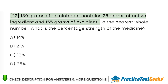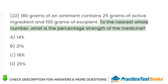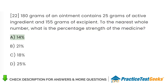180 grams of an ointment contains 25 grams of active ingredient and 155 grams of excipient. To the nearest whole number, what is the percentage strength of the medicine? A. 14%. B. 21%. C. 18%. D. 25%.